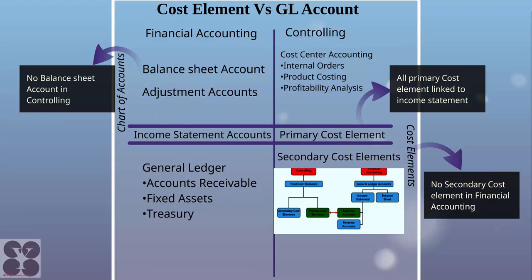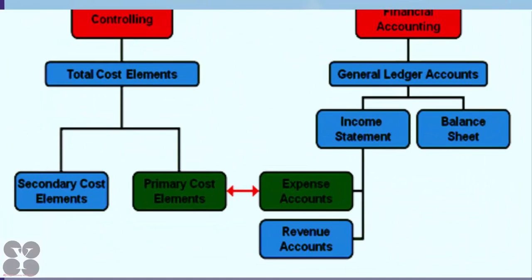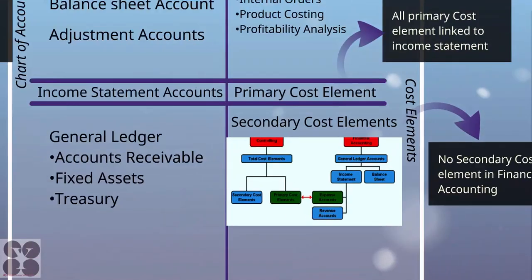Secondary cost elements don't appear in financial accounting. For example, if a company has two departments with internal cost planning and cost sharing, those internal plans are not visible externally — that's where we use secondary cost elements. In Controlling there are two types of cost elements: primary and secondary. Primary cost elements map one-to-one with expense accounts in the FI income statement, though special circumstances may have different mappings.